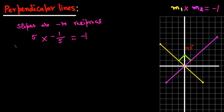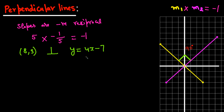Let's solve an example: write an equation of a line that passes through the point (8, 3) and is perpendicular to the line y = 4x - 7. We are trying to find a line that is perpendicular to this given line and passes through this point. Step 1: find the slope.